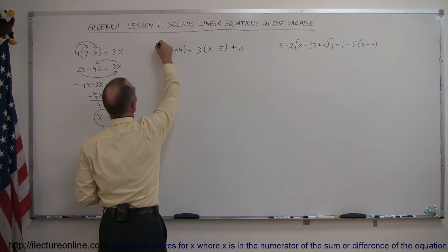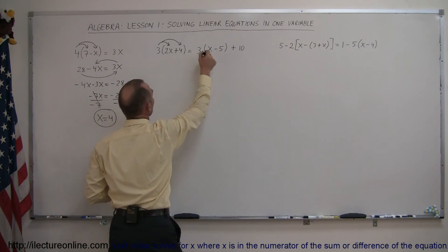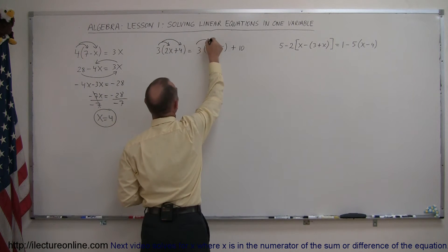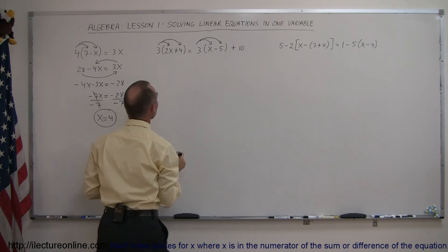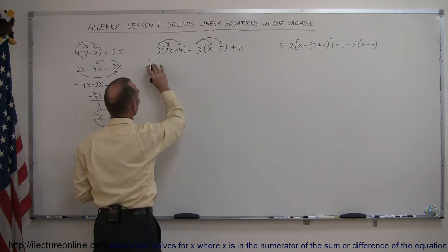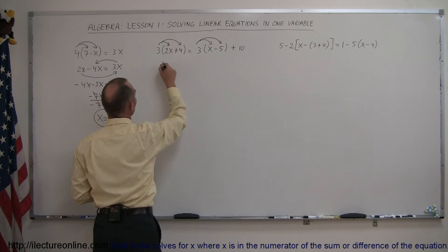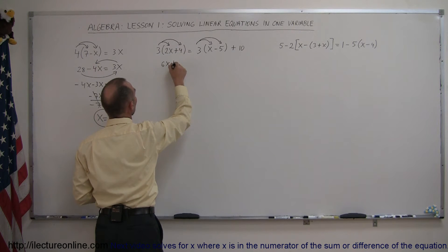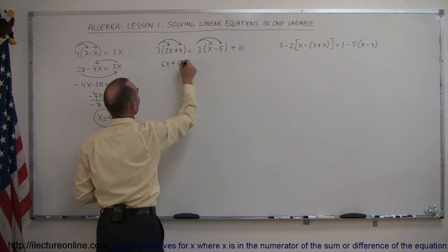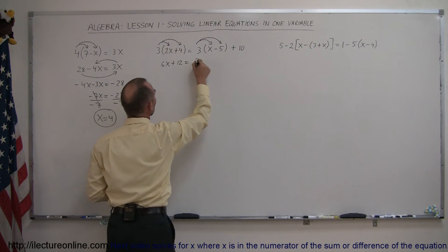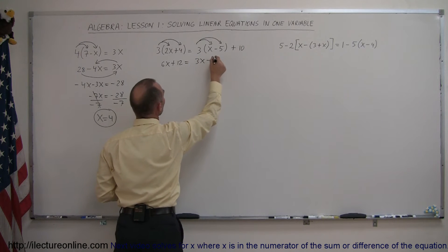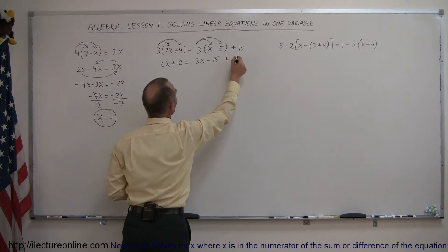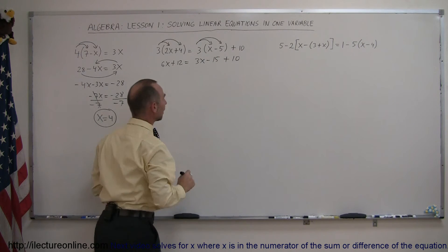We multiply the 3 times the 2x, the 3 times the 4, the 3 times the x, and the 3 times the negative 5, and see what we get. So 3 times 2x is 6x, 3 times 4 is plus 12, equals 3 times x which is 3x, and 3 times negative 5 is minus 15, and then we still have the plus 10 over there.